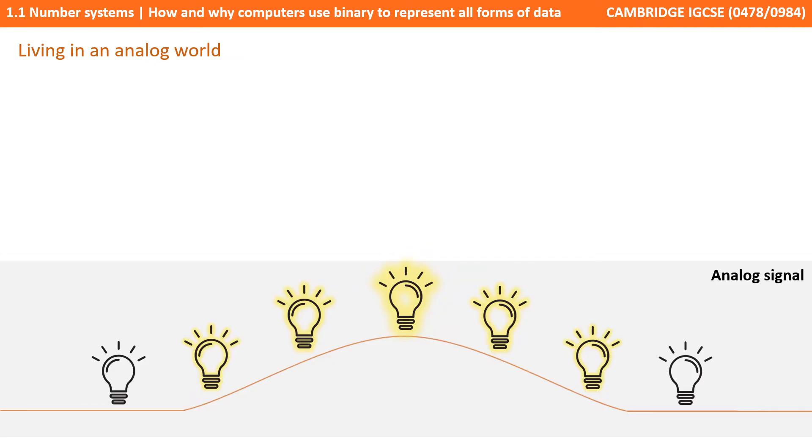So we live in an analogue world. All of our perceptions from sound to touch and sight can be measured on a continuous sinuating line. Take this simple example of turning a light on and off again.